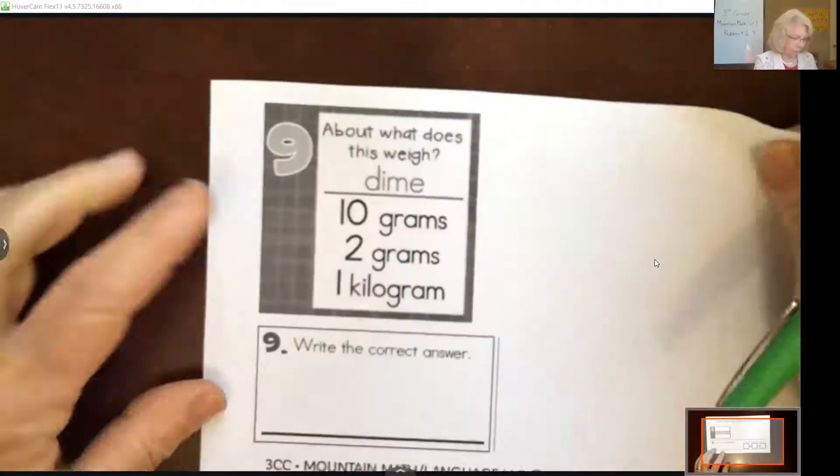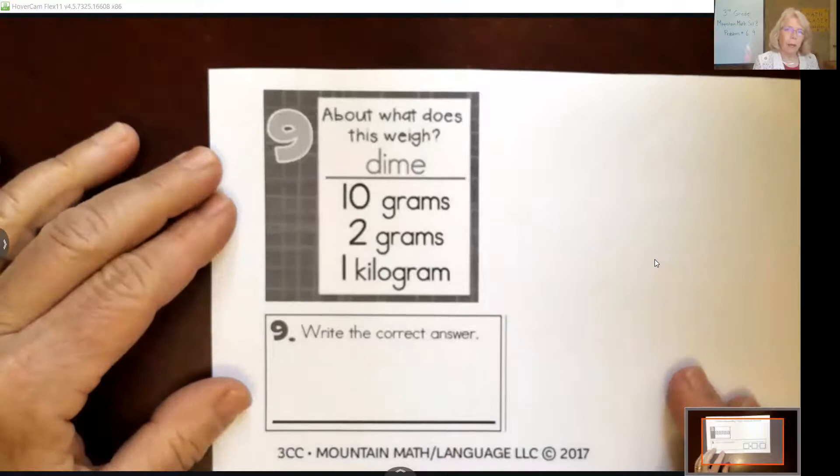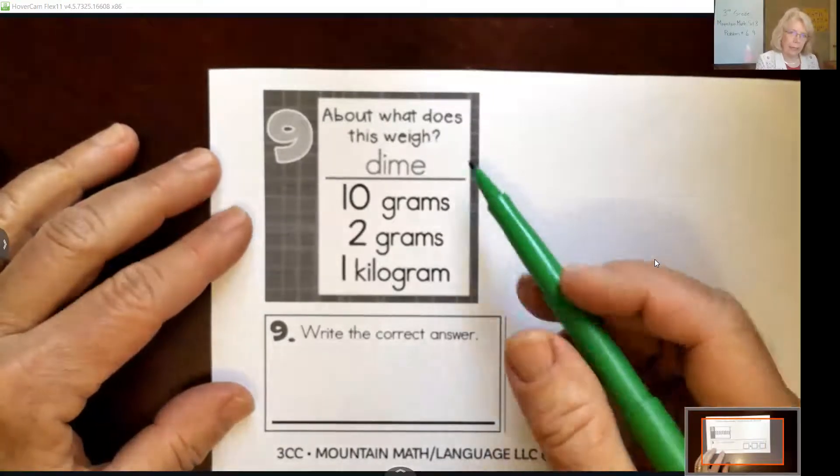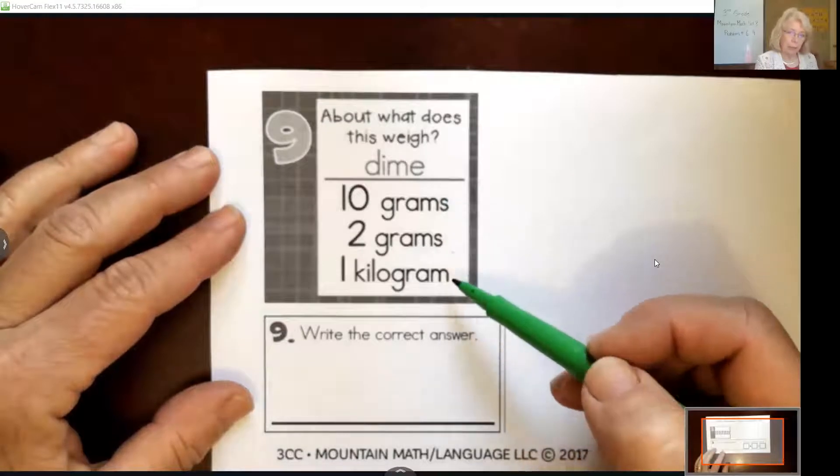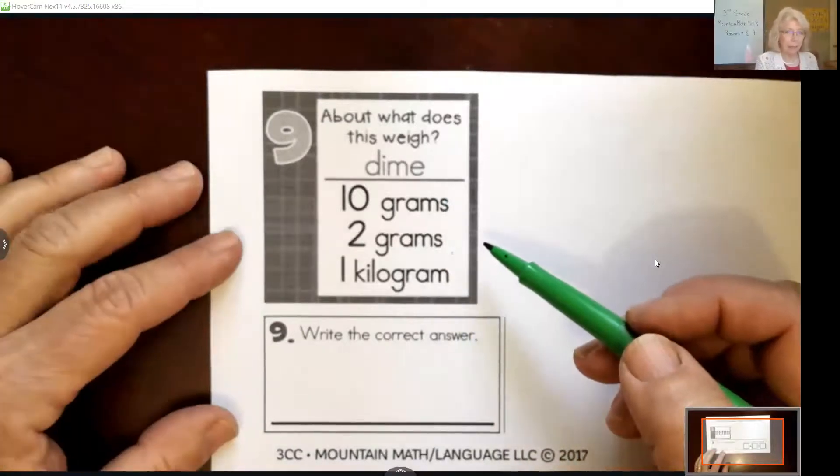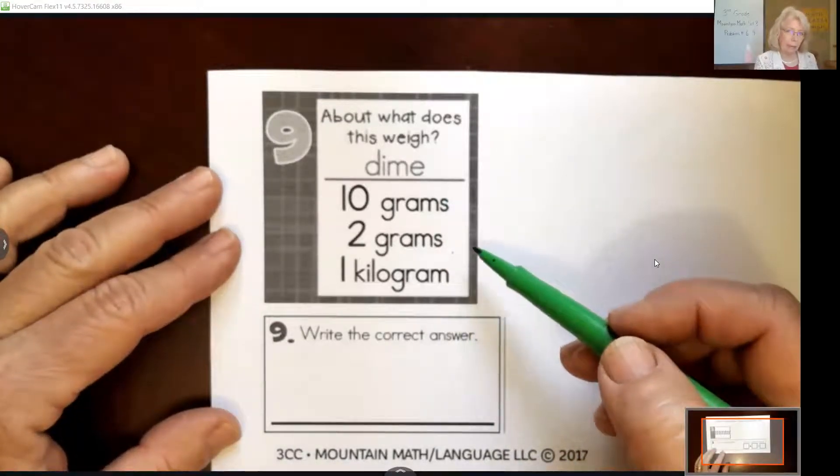Let's go on to number 9. About what does this weigh? A dime. It gives us weights in grams, which is not what we're accustomed to. We're used to pounds and ounces.